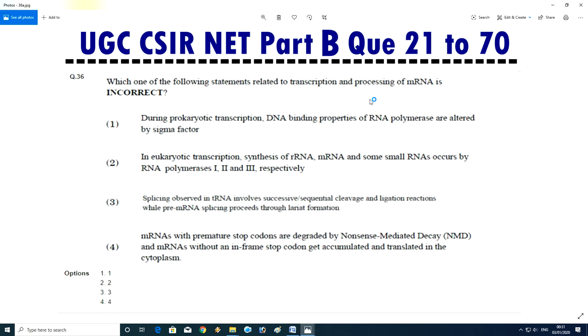Question No.37 - Which of the following statement related to transcription and processing of mRNA is incorrect. During prokaryotic transcription, DNA binding property of RNA polymerase is altered by sigma factor. In eukaryotic transcription, synthesis of mRNA, some small RNAs occur by RNA polymerase 1, 2, 3 respectively. Splicing observed in tRNA involves successive sequential cleavage and ligation reaction while pre-mRNA splicing proceeds through lariat formation. mRNA with a premature stop codon is degraded by nonsense mediated decay. An mRNA without an in-frame stop codon gets accumulated and translated in the cytoplasm. Let's see guys, question answer is 4 for 36.